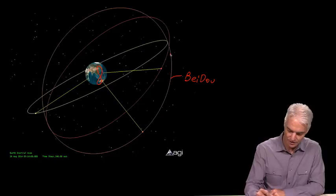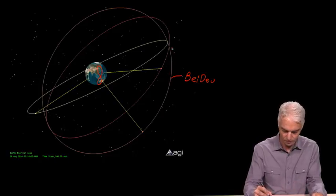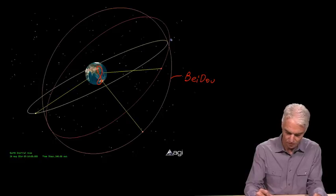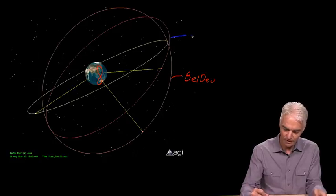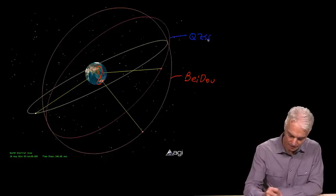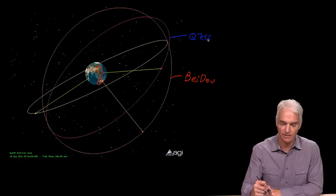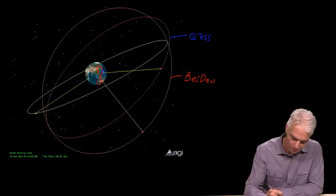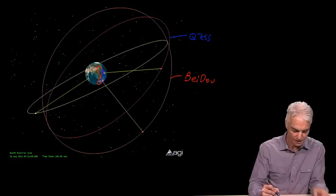And it produces this eight over China. And then the next highest inclination angle, I'll do this in blue, is QCSS.